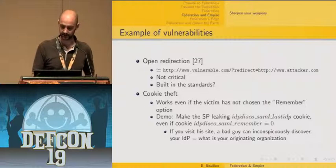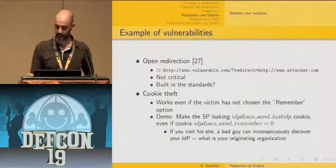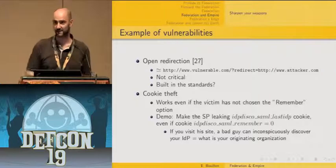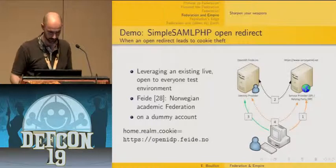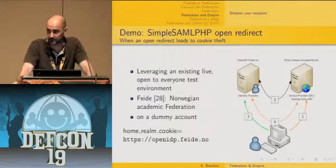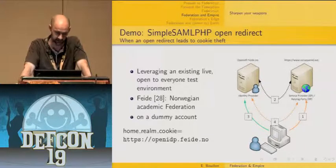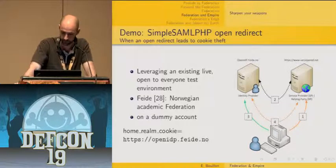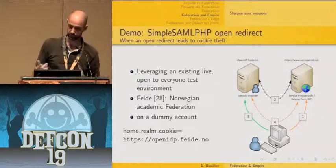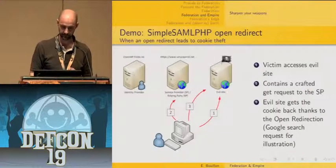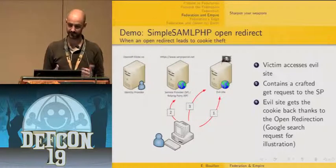If you visit a malicious site, a bad guy can inconspicuously discover your identity provider — revealing your originating organization. That's at least a privacy issue. To demonstrate this, I've been leveraging an existing live open test environment provided by the Norwegian Academic Federation called OpenIDP, using a dummy account. The cookie I'm going to steal is from https://openidp.feide.no.